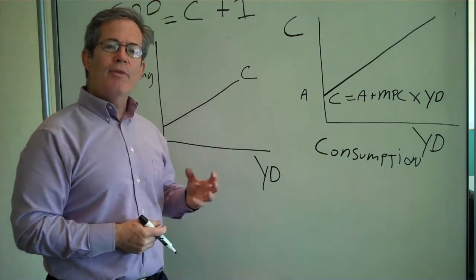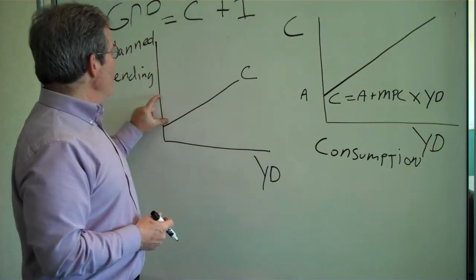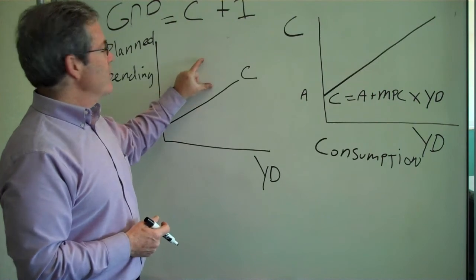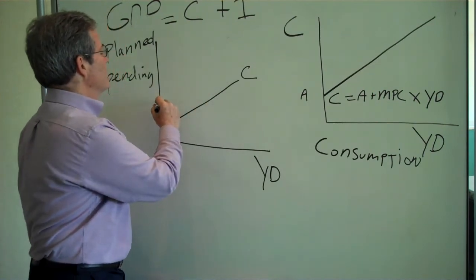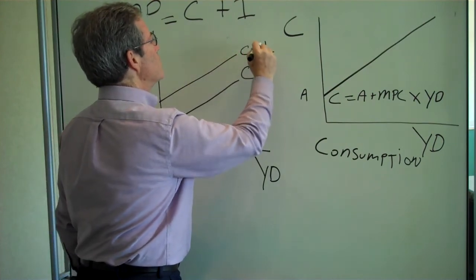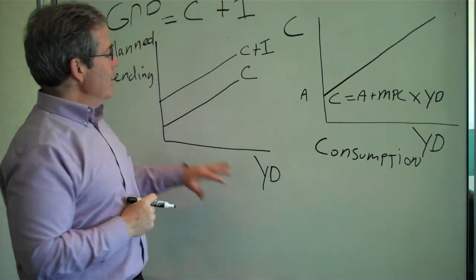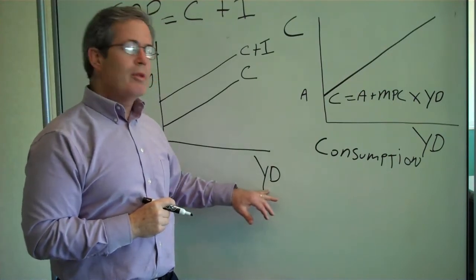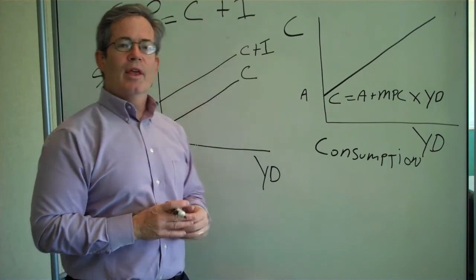And remember, before we had investment was equal to, say, a hundred dollars. So at every point here, we're just going to add a hundred dollars. And there we have it. Planned spending at every level of disposable income is equal to consumption plus investment.